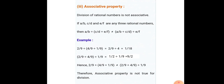Associative property is also not true for division, because dividing three rational numbers in different groupings always gives different results. Here we take 2/9, 4/9, and 1/9. In the first case, we divide 4/9 by 1/9 to get 4, then divide 2/9 by 4 to get 1/18. In the second case, we divide 2/9 by 4/9 to get 1/2, then divide 1/2 by 1/9 to get 9/2. The results are not the same, so associative property is not true for division.